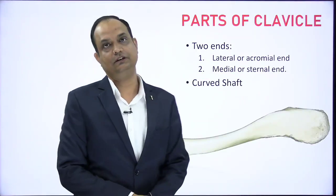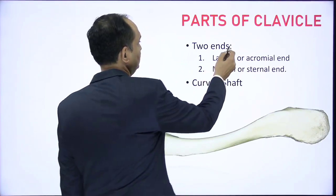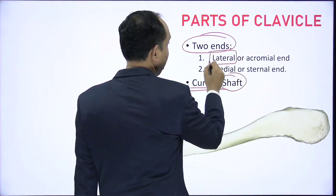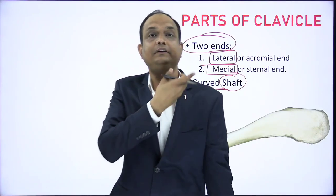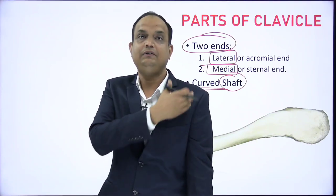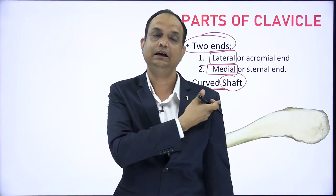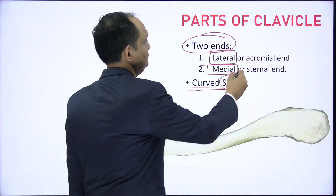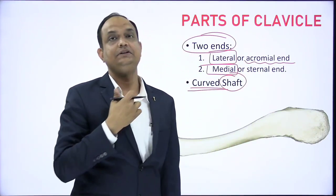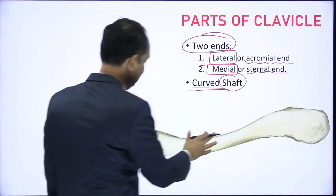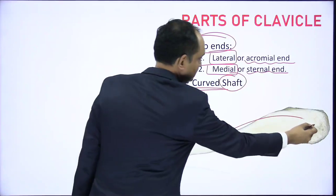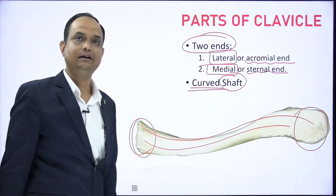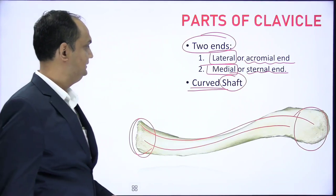The clavicle has two ends and a shaft. The shaft is curved, and the ends are lateral and medial — because it is horizontally placed, we use medial and lateral rather than upper and lower. The lateral end faces the acromion process of the scapula, so it is known as the acromial end, and the medial end faces the sternum, so it is known as the sternal end. We will see how to identify these ends in the coming slides.